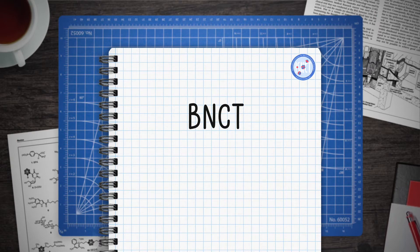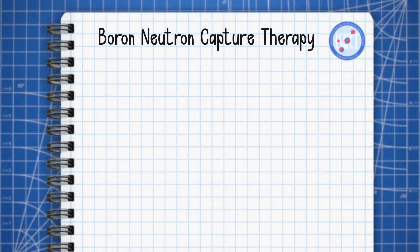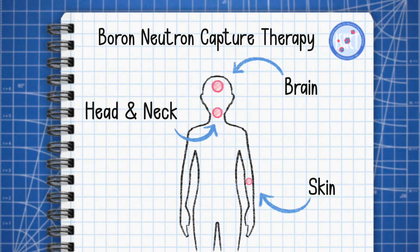BNCT stands for Boron Neutron Capture Therapy. It is a selective form of radiotherapy used mostly to treat solid tumors. BNCT's principal targets are head and neck cancer and glioblastoma. Other targets have also been explored, such as melanoma and liver metastases.